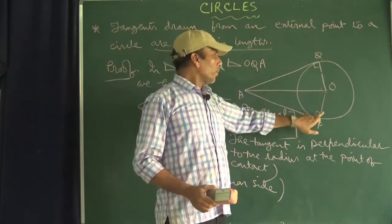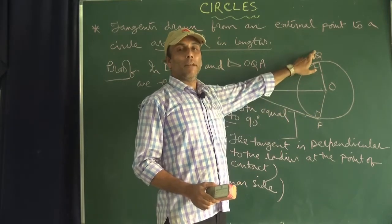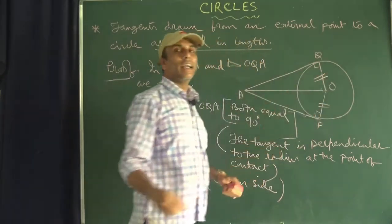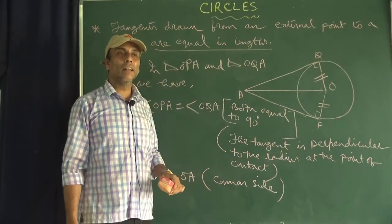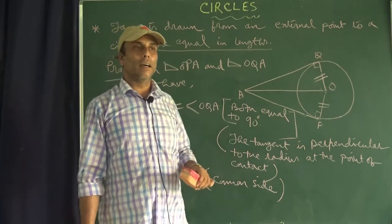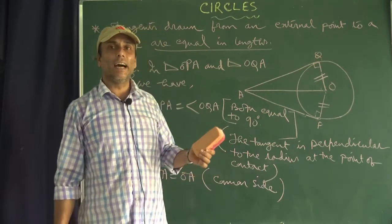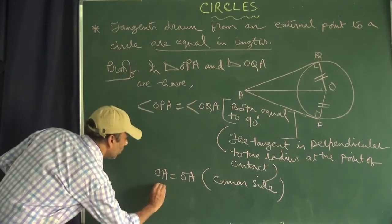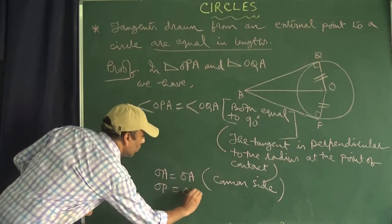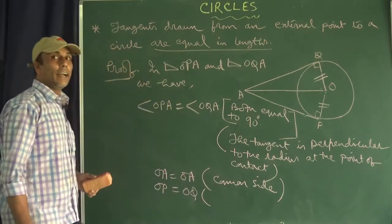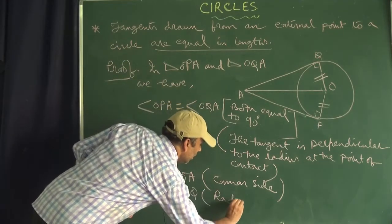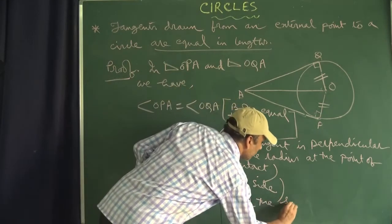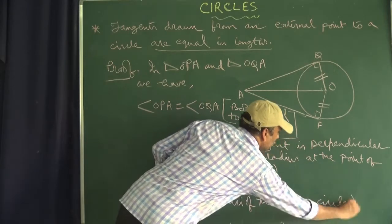What else is equal? It should be OP equal to OQ. We can write OP equal to OQ because OP and OQ are radii of the same circle. In a circle, all radii are equal. So the third thing we write is OP equal to OQ, with reason: radii of the same circle.